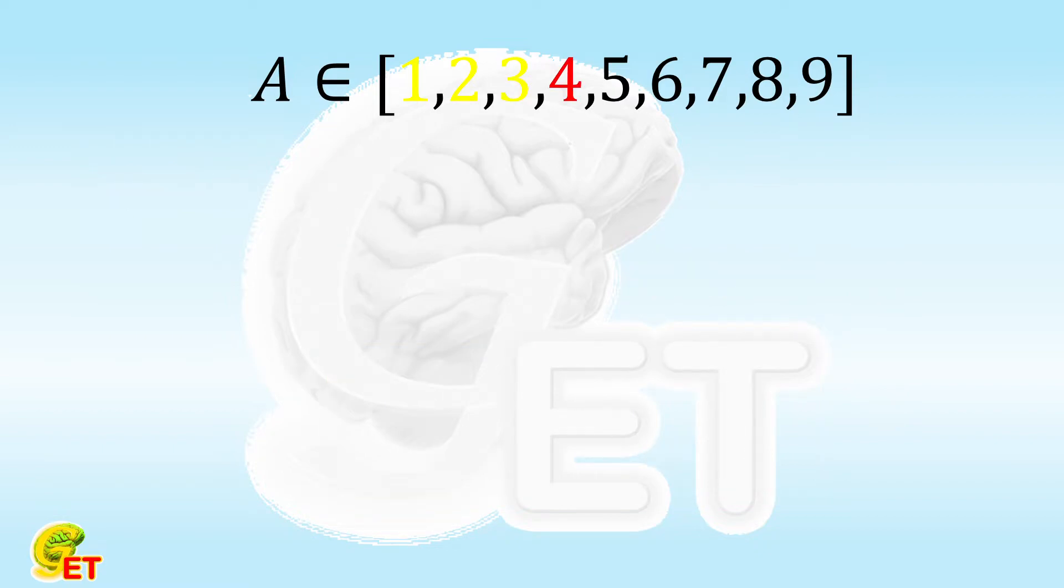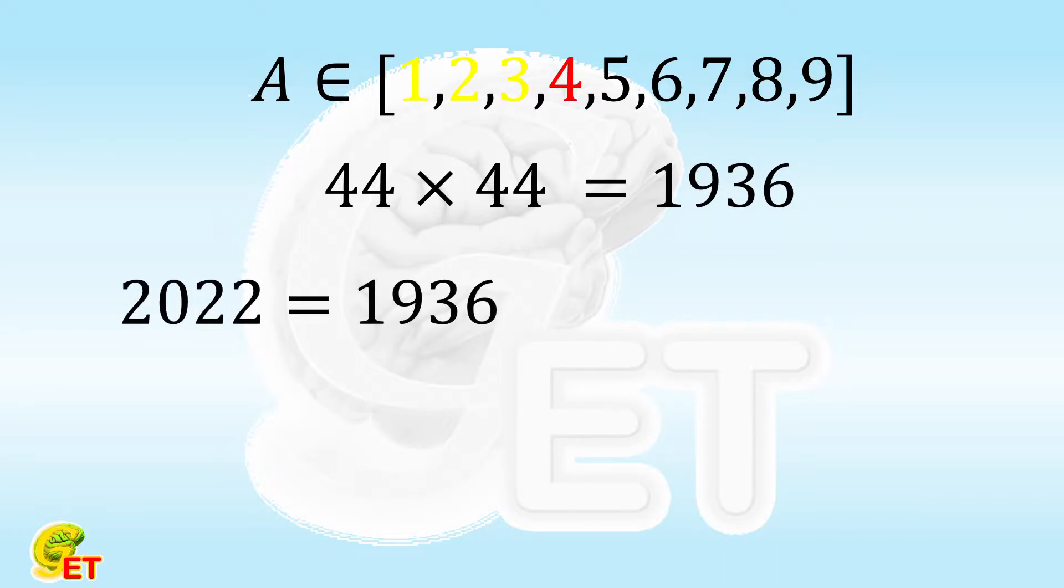We know that 44 is exactly in between 40 and 50. So let's start by looking at 44 times 44, which equals 1936. How big is the difference between 2022 and 1936? 2022 equals 1936 plus 86, which is 88 minus 2.